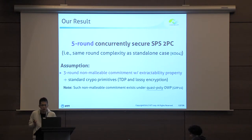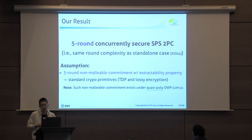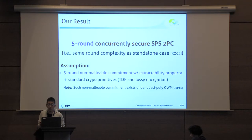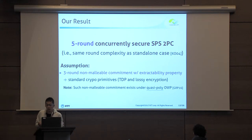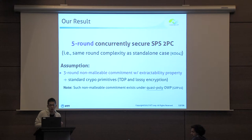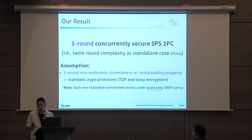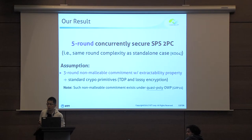The assumptions we use are standard cryptographic primitives such as trapdoor permutation and lossy encryption. Additionally, we use a three-round non-malleable commitment that satisfies some extractability property. We know from previous work that such a non-malleable commitment can be constructed from one-way permutations that are secure against sub-exponential time adversaries, so our result can be based on such sub-exponentially hard one-way permutations.